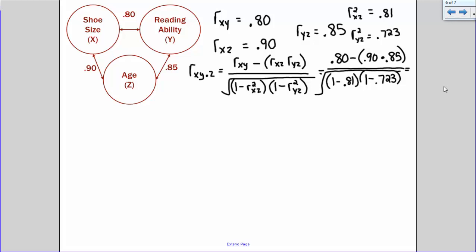So let's solve for what's in the parentheses first. Order of operations is important here. So we're left with 0.80 minus 0.90 times 0.85 gives me 0.765, divided by the square root of 1 minus 0.81 gives me 0.19, and 1 minus 0.723 gives me 0.277. So the numerator isn't going to change yet because we need to multiply what's in that square root, so 0.80 minus 0.765.